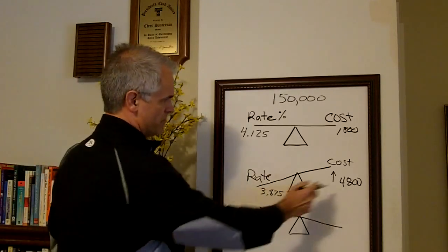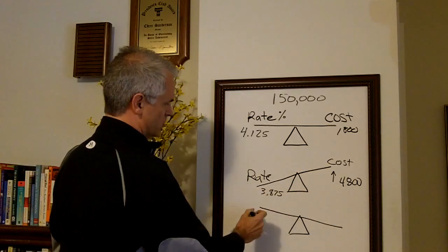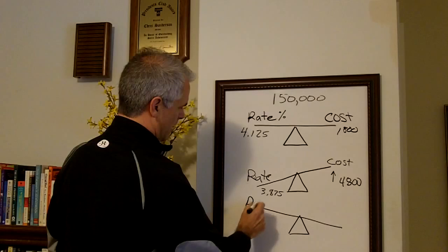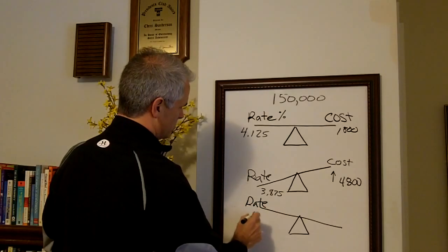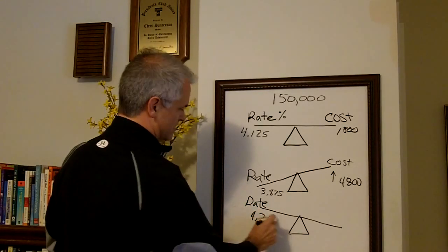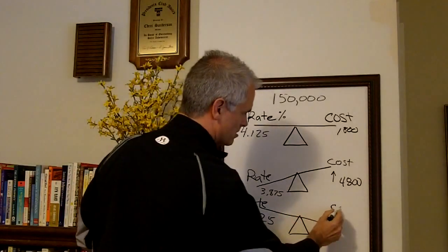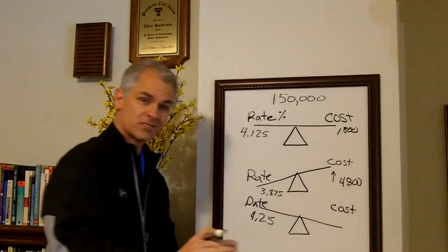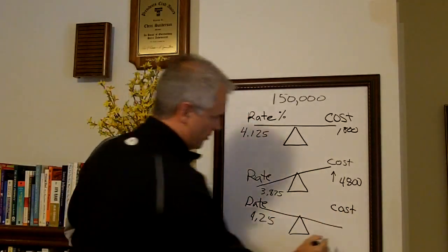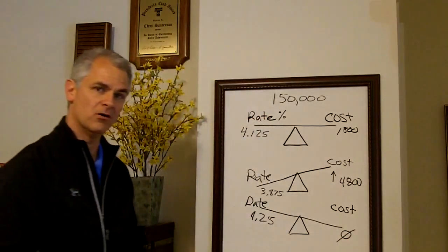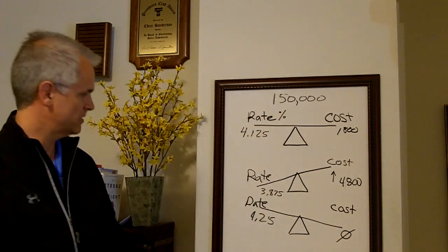So if that were the case, what I might suggest is rather than pay down to get the lowest rate, we'll make the rate up a little higher. Maybe the rate is $4.25 in this case but the cost, see the cost, we're going to push down. So the cost here might be $0 to do this loan. $0.